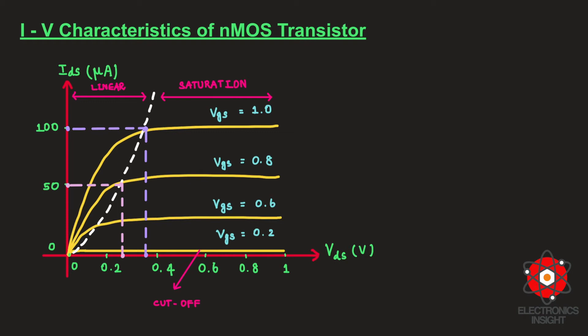When we further increase the applied drain-to-source voltage, we observe that the drain-to-source current gets saturated. Now in this video, we are going to focus on how this linear region is also known as a resistive or ohmic region, and how we can use this NMOS transistor as a voltage-controlled resistor.